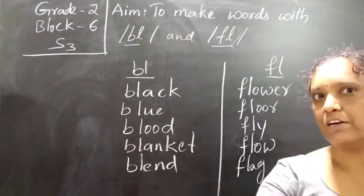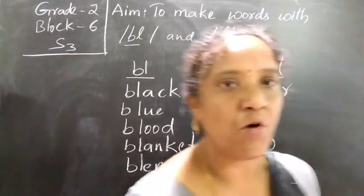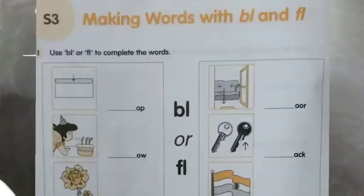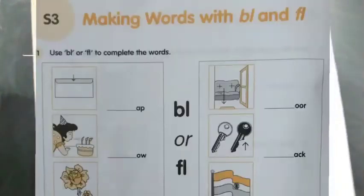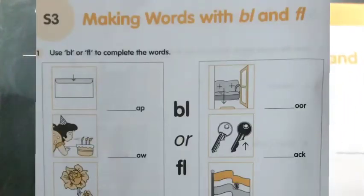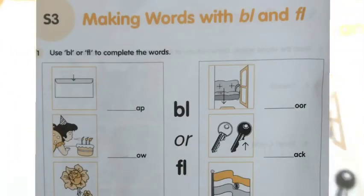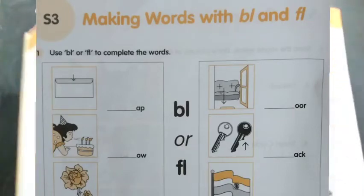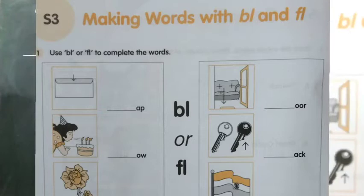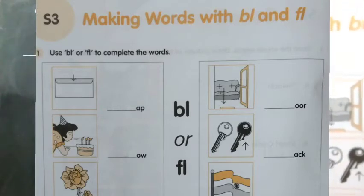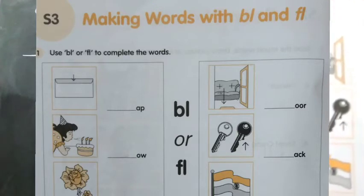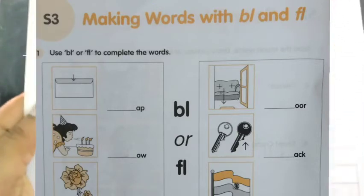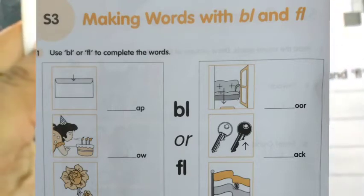Basing on this let us complete our workbook. So take the workbook page number 38. Can you see the page number 38. Making the words with bl and fl. So use bl and fl to complete the words. You can see some pictures there. So you want to complete these pictures.